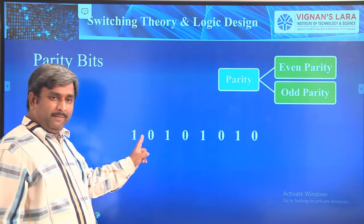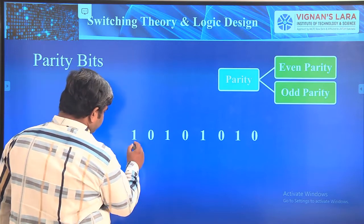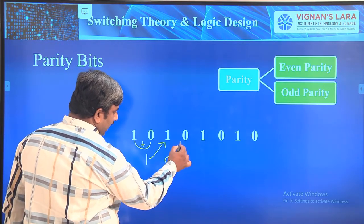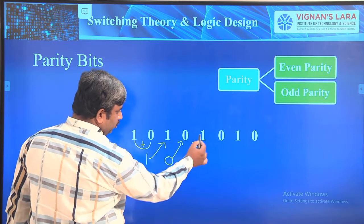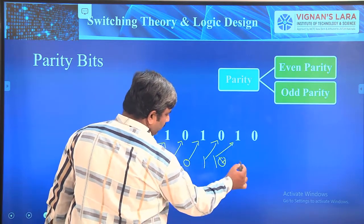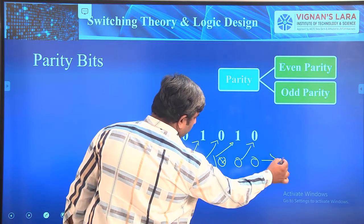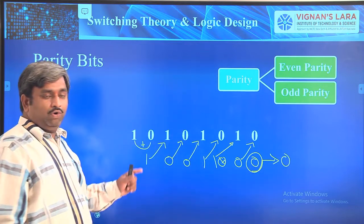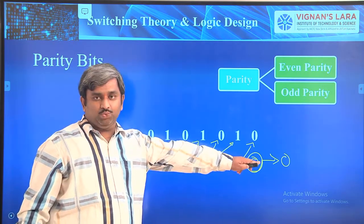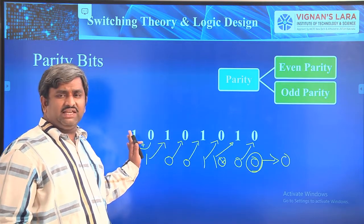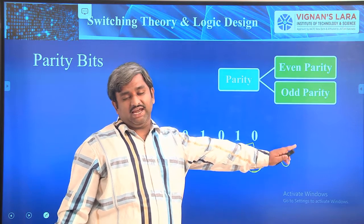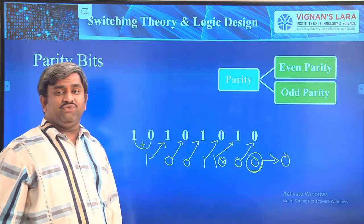Another way to verify: add all the bits using XOR (adding two bits at a time). One plus zero is one; add these two — one plus one is zero; zero plus zero is zero; zero plus one is one; one plus zero is one; one plus one is zero; zero plus zero is zero. The final answer is zero. If you add any sequence and get zero, that is called even parity. If you get one, that is called odd parity.